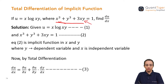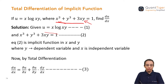Whenever this kind of function comes in the question, making a diagram is the better option. We start with the given function: u = x·log(xy), which we call equation one. The other implicit function given is x³ + y³ + 3xy, which we call equation two. Whenever the function is implicit, remember that y is the dependent variable and x is the independent variable.